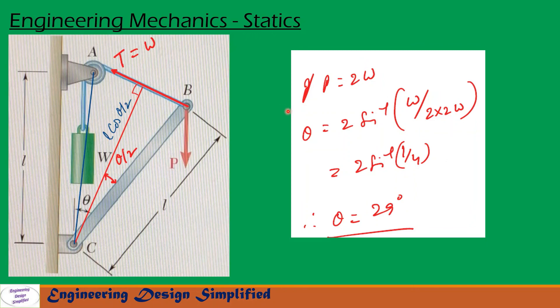Now let us see the second portion of the problem, that is if P equals 2 times W. Let us substitute P equals 2 into W in this equation. So we get after simplification theta equals 29 degrees. If P is 2 times W, then the angle theta will be 29 degrees for the bar to be in equilibrium.